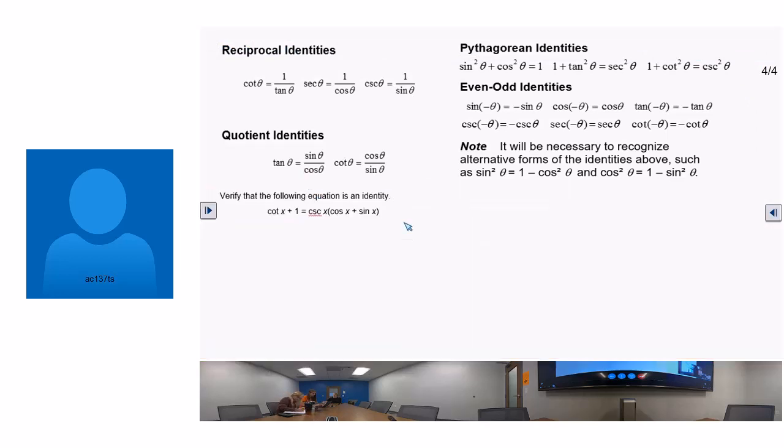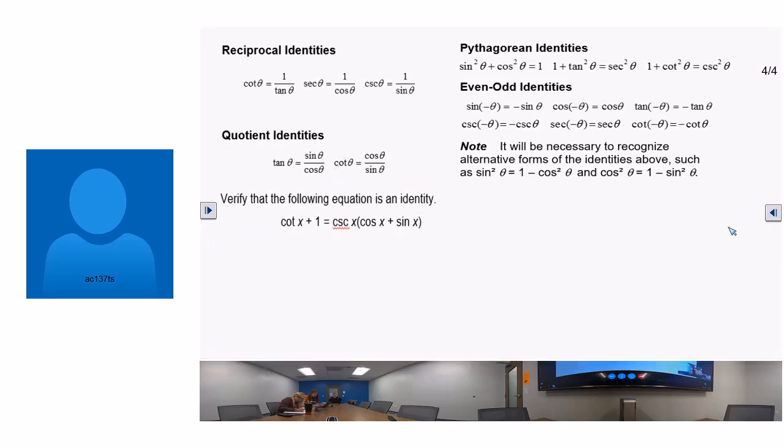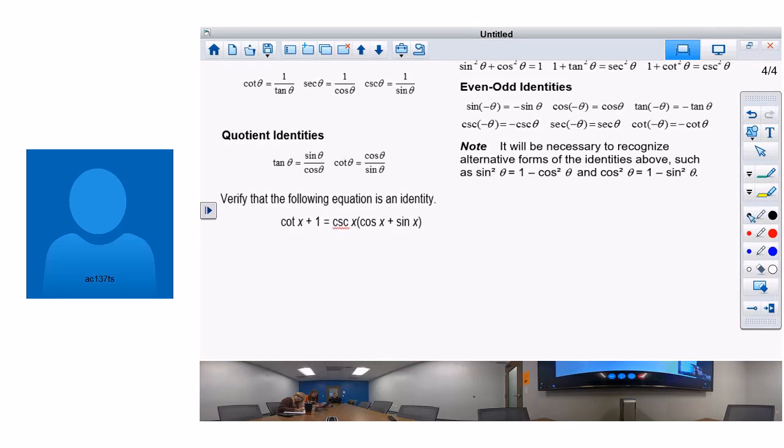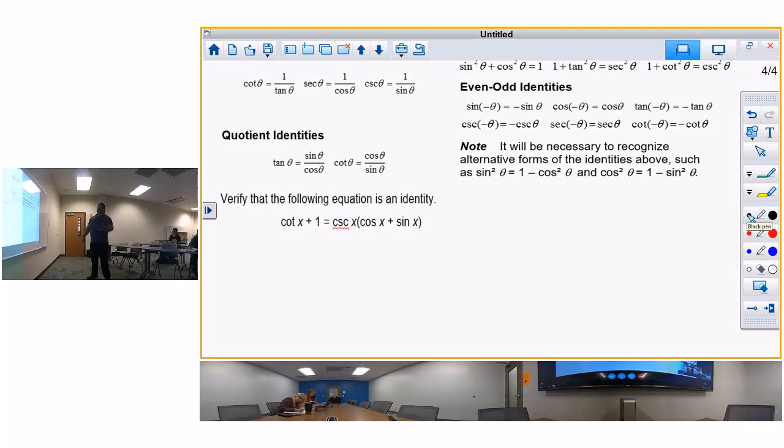Write that one down. This is one we did also the other day, but I'm redoing it because something happened to the recording yesterday for the one person that watches it. Verify that the following equation is identity. I'm just going to go out on a limb here and say, as I said the other day, most of the time you prove what's on the right.